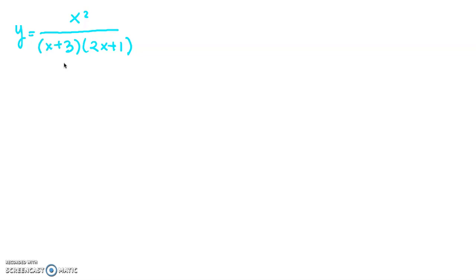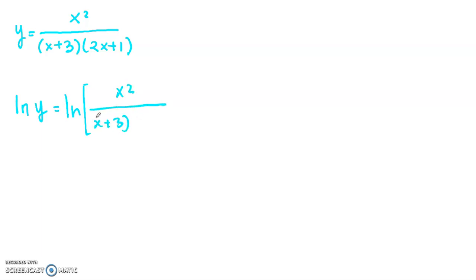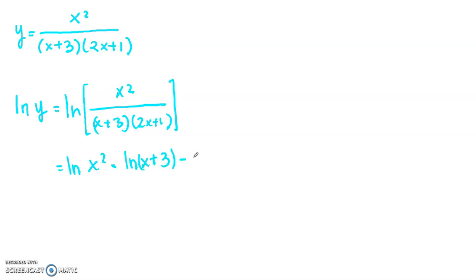First we try to convert this function into a logarithmic function. We convert both sides into logarithms. So we have ln(y) equals ln of x-squared over (x+3)(2x+1), and we know from the logarithm rule that ln(u/v) equals ln(x²) minus ln(x+3) minus ln(2x+1).